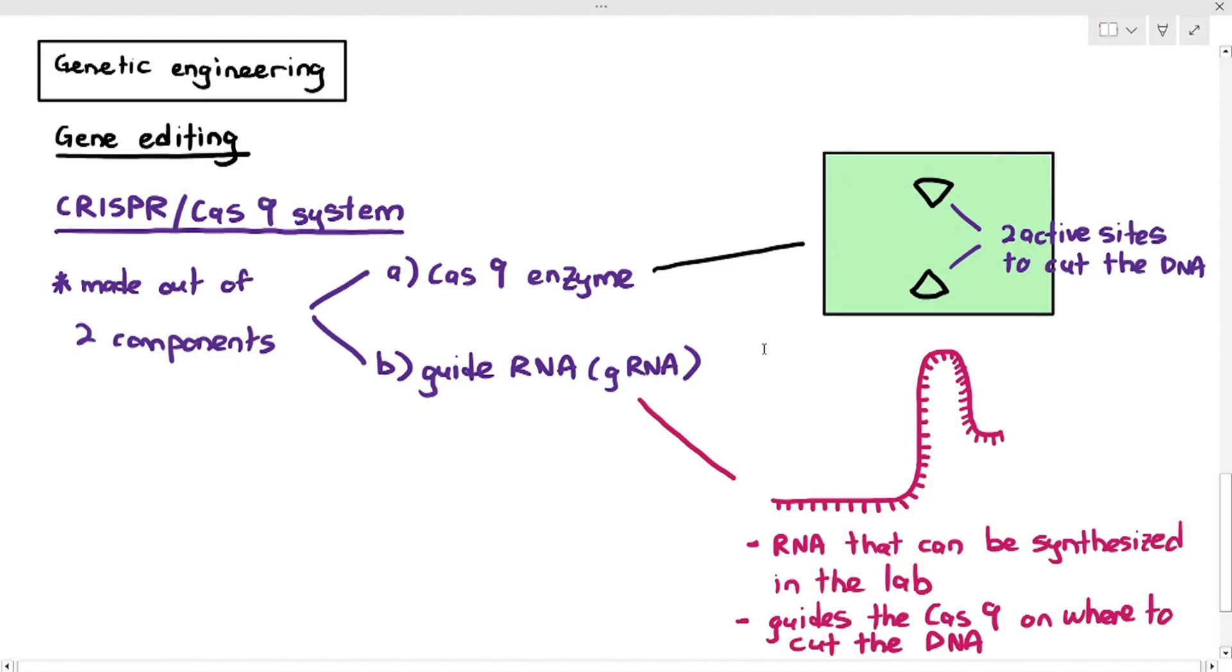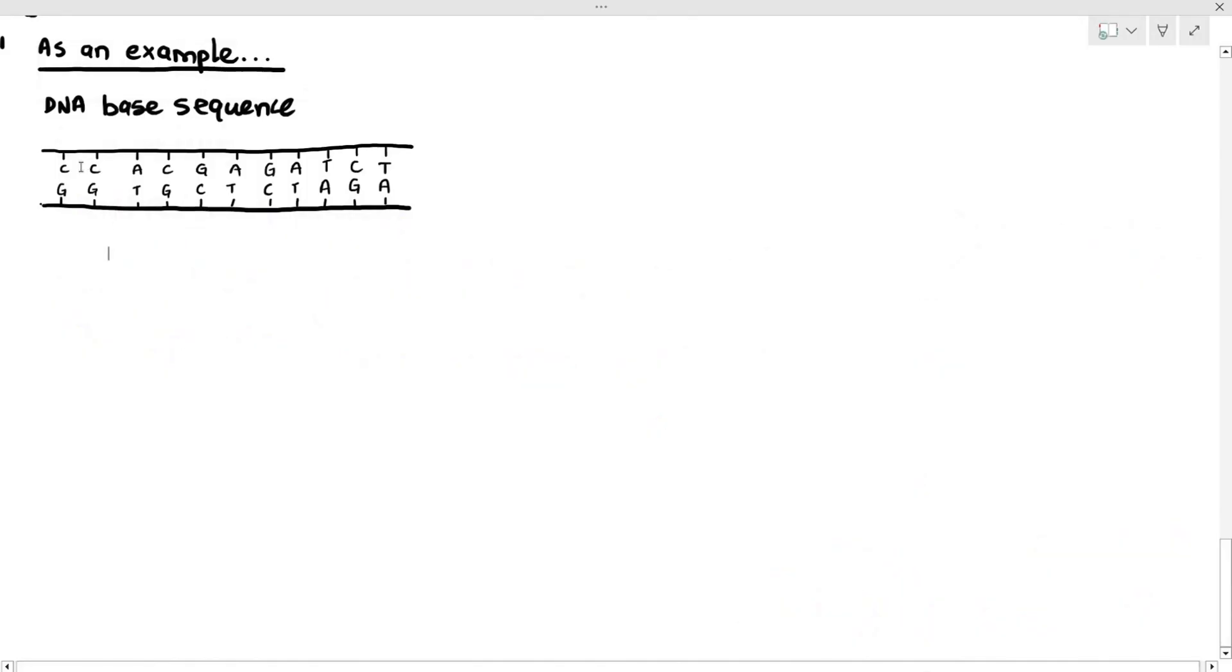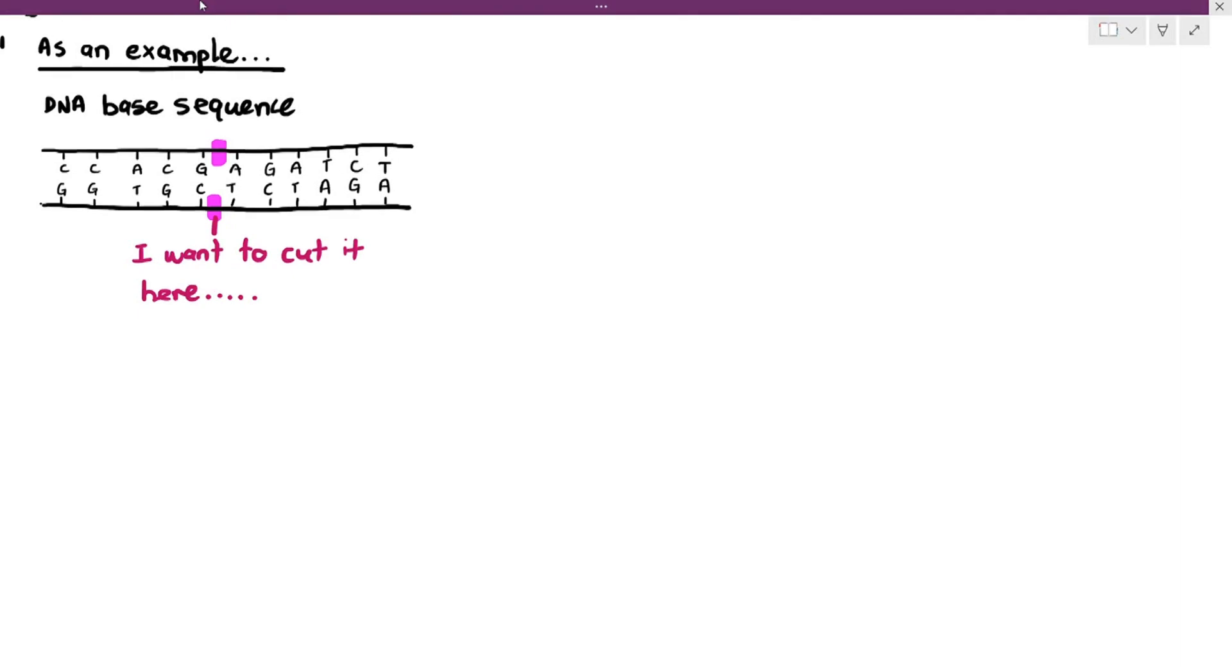As an example here, let's say we have a DNA base sequence. Please do not memorize the sequence here. And for example, I want to cut the DNA at that specific region, which I've highlighted in pink, maroon. Yeah, that color, okay? So I want to cut the DNA there.